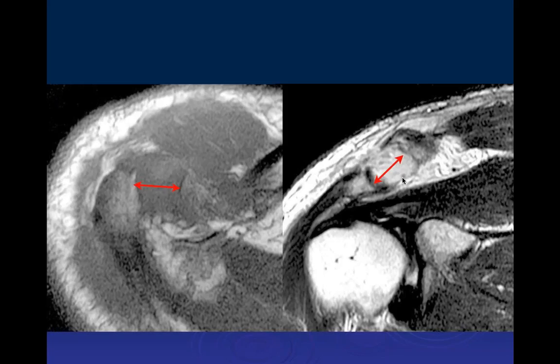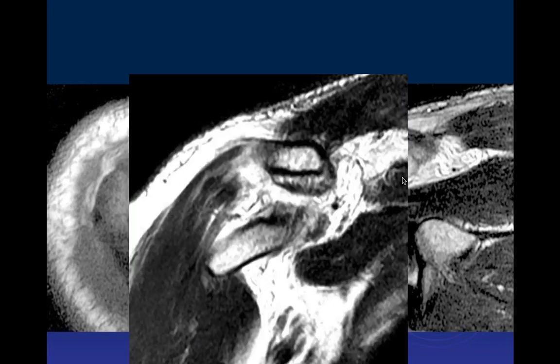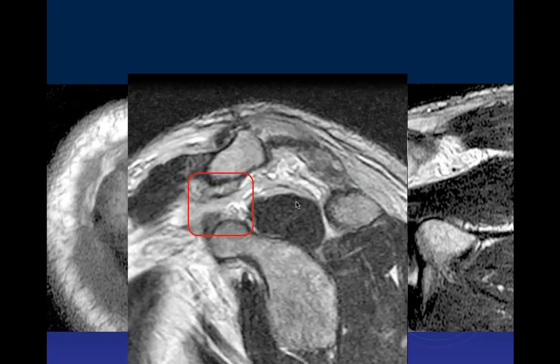The next thing to evaluate is the CC ligament to see if it's intact. The coracoclavicular ligament appears torn here, so this upgrades the injury. The coracoclavicular ligament seems to be torn, making this at least a Type 3 lesion.